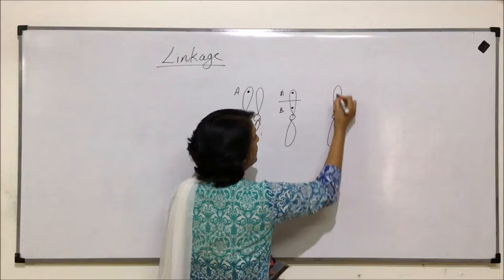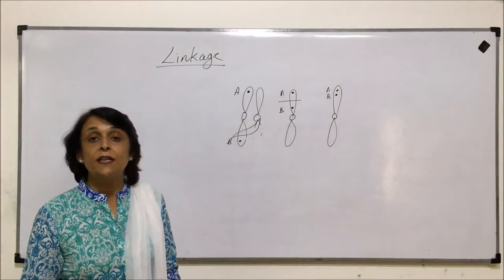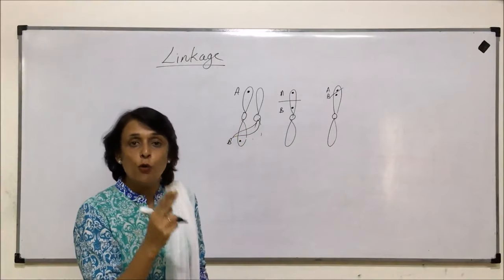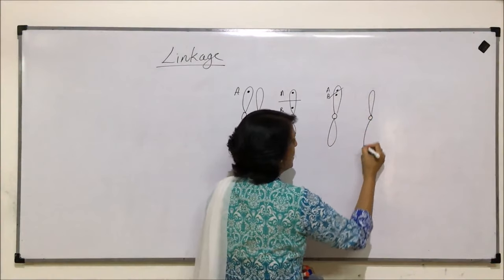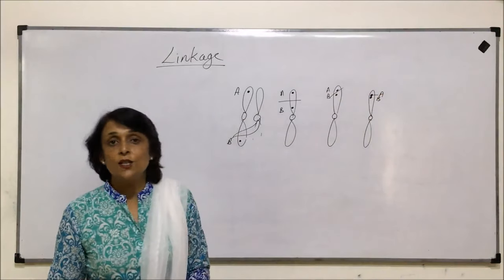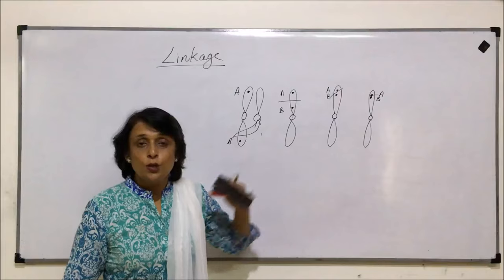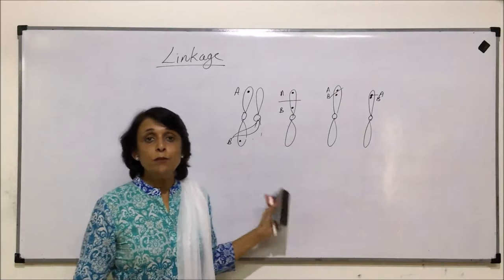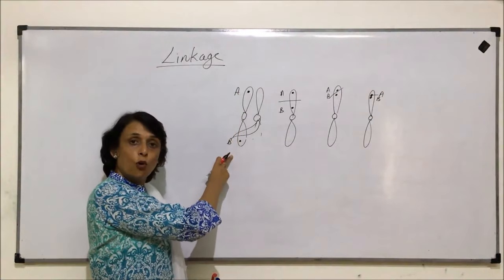In a third situation, gene A is located here and gene B is located here — the chances of them getting separated are even less, because crossing over must take place between these two very close points. In a fourth situation where gene A and gene B are right next to each other, the chances of separation are very nearly zero. So depending upon the location, the chances of the genes showing recombination are more or less.